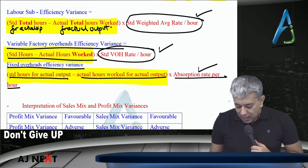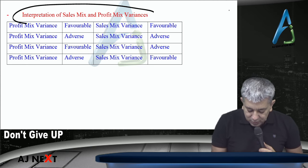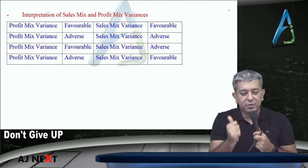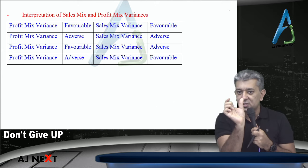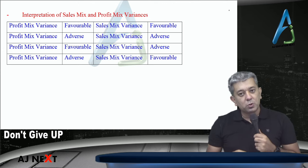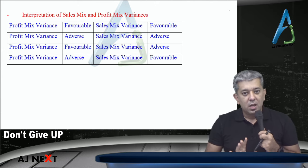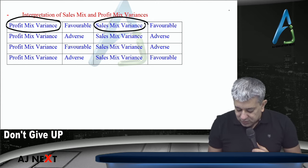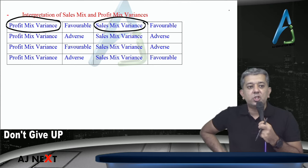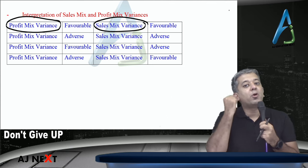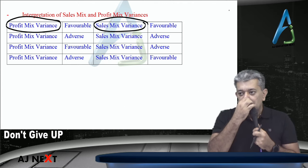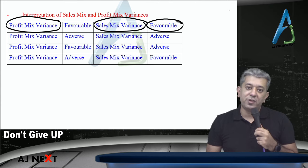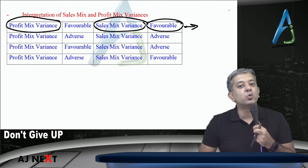So remember: profit volume and sales volume are related for one product; profit quantity and sales quantity are related even for multiple products; and labor sub-efficiency, variable overhead efficiency, and fixed overhead efficiency variances all share the same bracket. Now the second part of this lecture: interpretation of sales mix and profit mix variances. Mix variances take care of ratio — they tell us about the ratio in which products should have been sold versus what was actually sold.